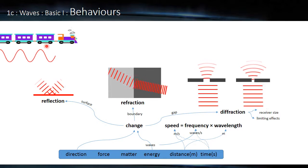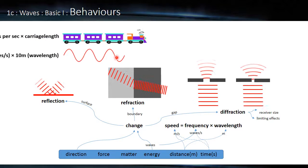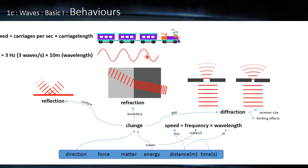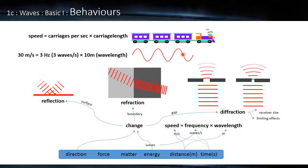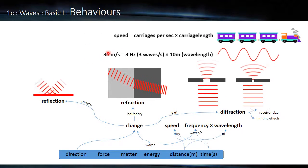So if we know the length of the carriage, and we know there's three carriages, we could work out the speed. And waves are no different. If we know this length, the length of the wave, we know there are three per second, then we could work out the speed of the wave, 30 meters per second in this case.